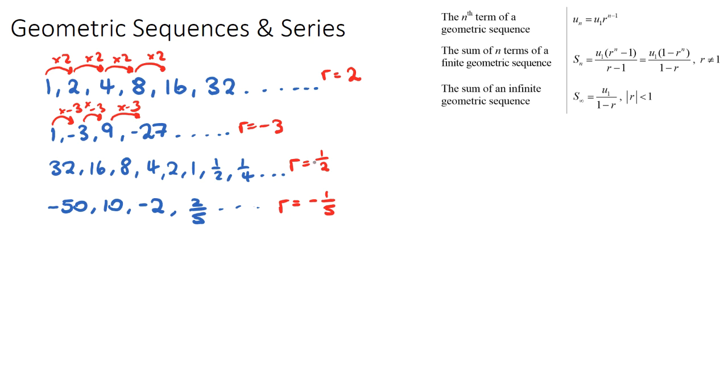So hopefully you can see the pattern here for r. r, our common ratio, is any term, I'm just going to say u_2 for now, over the term before it. So u_2 over u_1, it's u_3 over u_2, it's u_(n+1) over u_n. This just means any term divided by the term before it. And just by taking our first example, 2 over 1 is 2, 4 over 2 is 2, 8 over 4 is 2, so we have a common ratio there of 2.